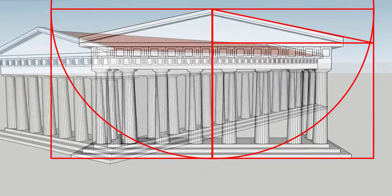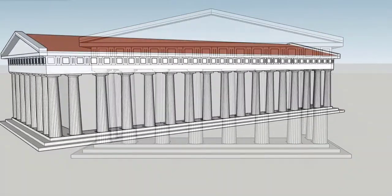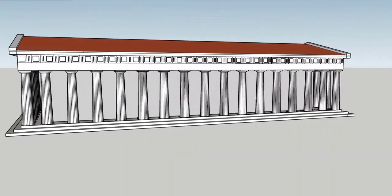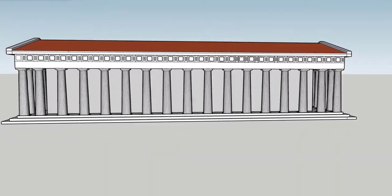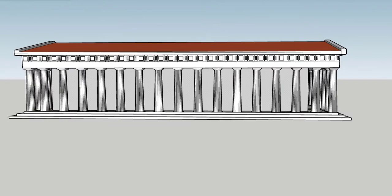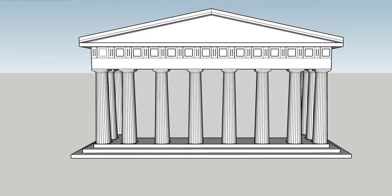What about the third dimension, the length? The Parthenon has seventeen columns along the side with sixteen intercolumnar distances, whereas the front, as we have said, has seven intercolumnar distances above its eight columns.